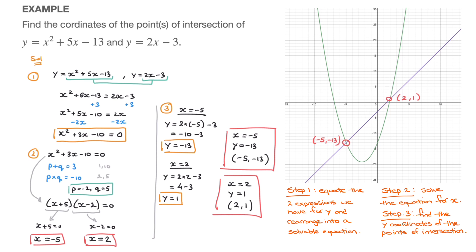We've finished this example finding the points of intersection of a parabola and a line. The three steps were: step 1, equate the y's — equate the expression for y in the parabola and in the straight line, then rearrange to form a solvable quadratic equation. Step 2, solve the quadratic — the solutions are the x-coordinates of the intersection points. Step 3, use the line equation with each x-coordinate to find the y-coordinates.